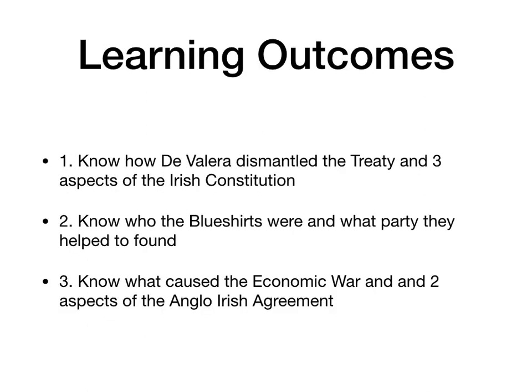So that brings us to the end of our presentation. By now you should know how de Valera dismantled the treaty: he removed the Governor General, the oath of allegiance, and any reference to the king during the monarchy crisis. In Bunreacht na hÉireann he established the Taoiseach, the President of Ireland, gave a special place to the Catholic Church, and the country became known as Éire. The Blue Shirts were a fascist organisation under Eoin O'Duffy that helped form the party of Fine Gael. The economic war was caused by a refusal to pay the land annuities, and two aspects of the Anglo-Irish agreement were the £10 million payment by the Irish and the return of the treaty ports and removal of all tariffs.